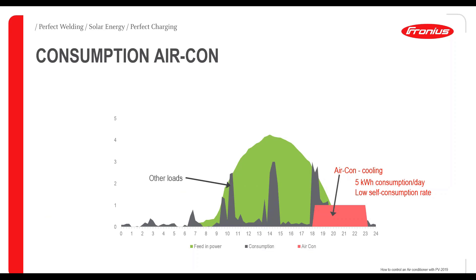In the daily curve of the household, the green area is the feed-in power generated by the PV system that is fed into the grid because it is not used in the household. The gray area is household consumption such as TV or cooking, and the red area is the air conditioning, powered on when inhabitants come home at around 6 in the afternoon. This results in 5 kilowatt hours of consumption per day for air conditioning with a low self-consumption rate, because most of the energy for the air conditioning comes from the utility grid and must be paid for.